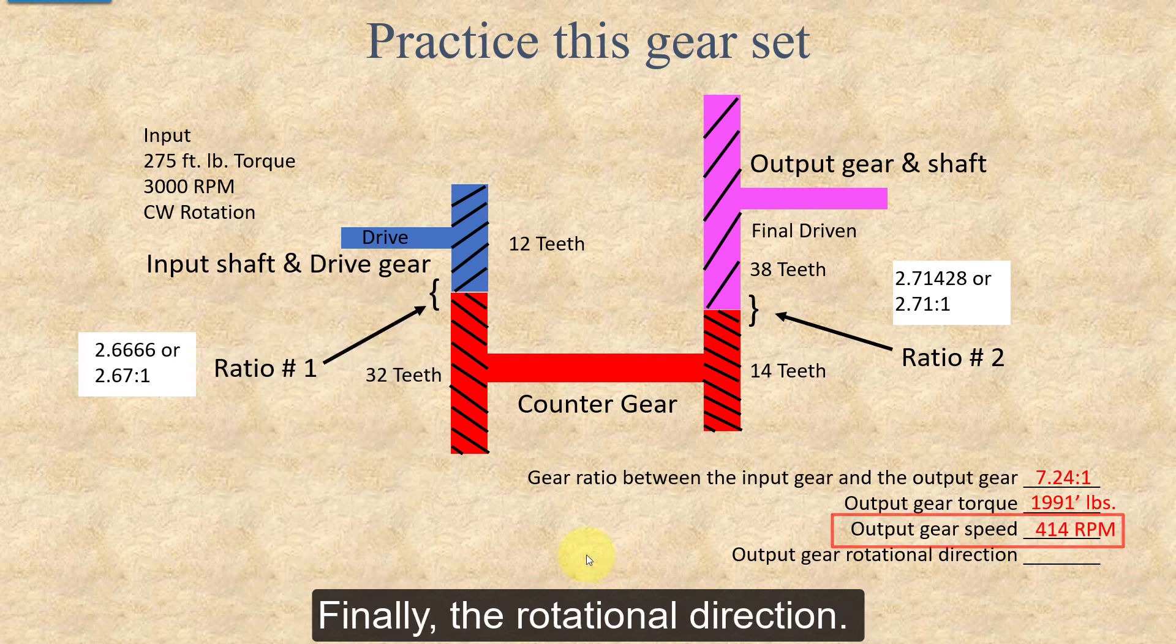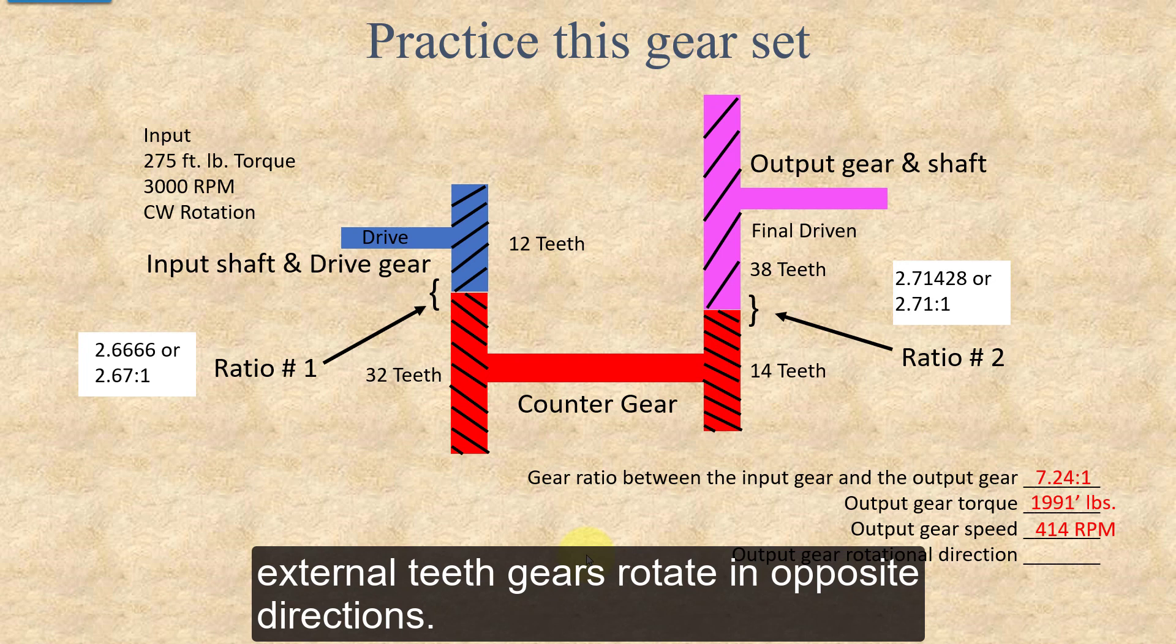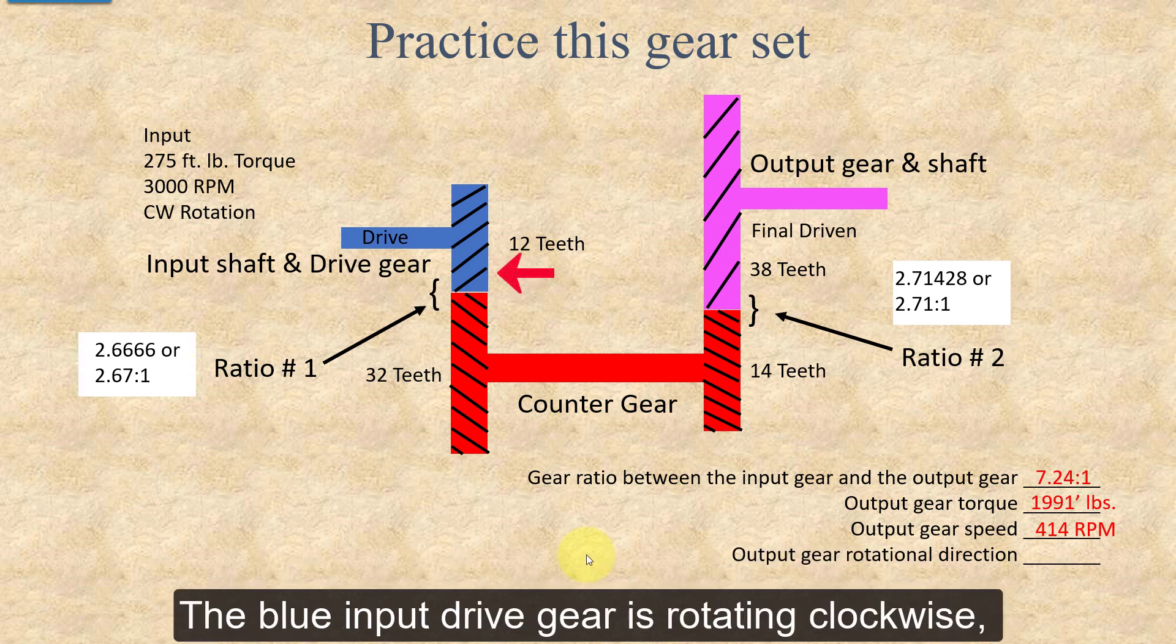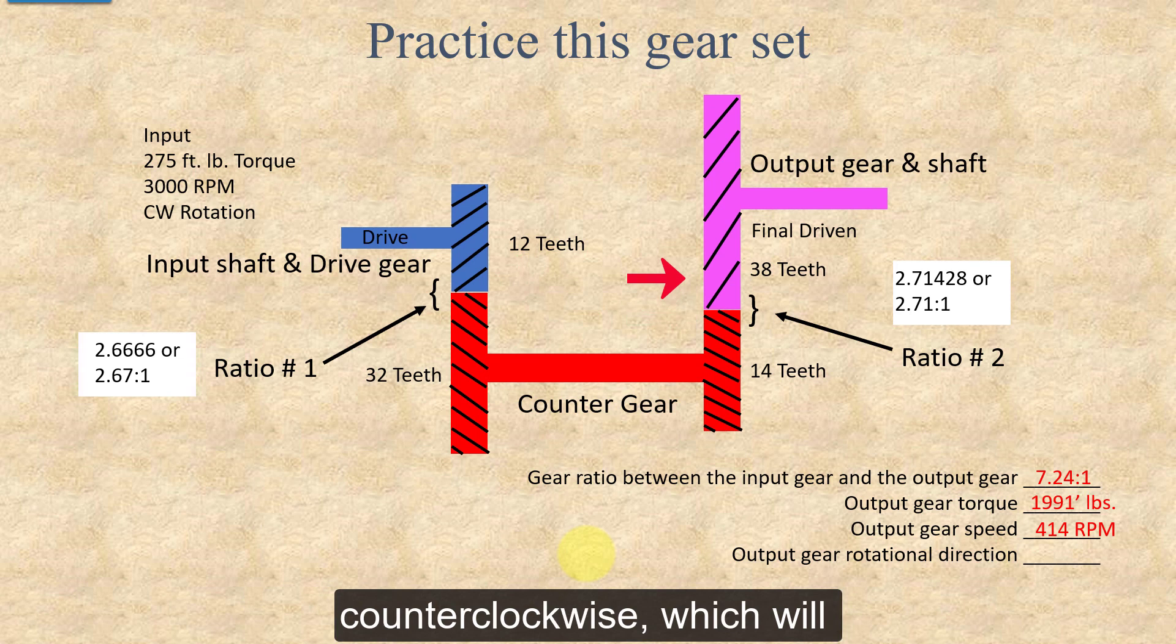And finally, the rotational direction. This is just our basic knowledge that two external teeth gears rotate in opposite directions. The blue input drive gear is rotating clockwise. Therefore, the red counter gear will turn counterclockwise, which will force the purple driven output gear to turn clockwise.